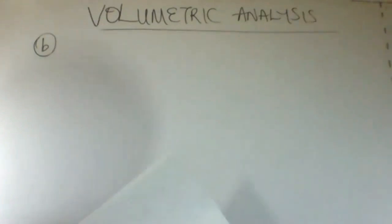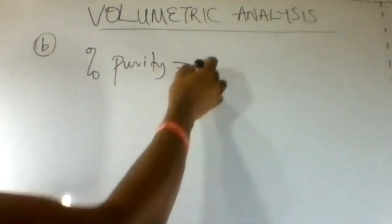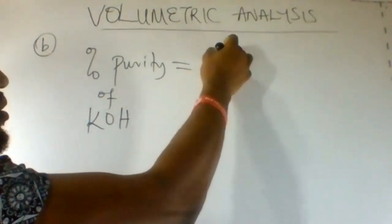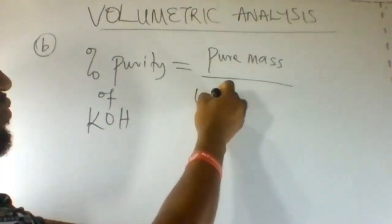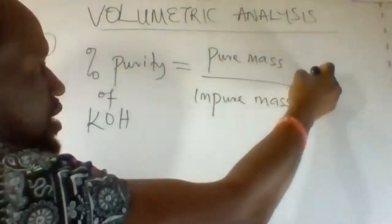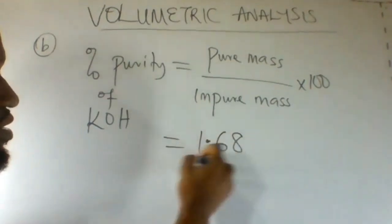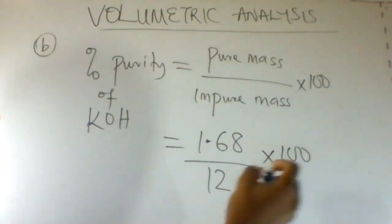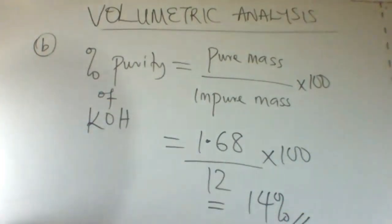Therefore, the percentage purity of KOH equals the mass of the pure KOH divided by the impure KOH multiplied by 100. Mass of the pure divided by mass of the impure multiplied by 100. The mass of the pure is 1.68. The mass of the impure is 12. Multiply that by 100. Our answer is 14%. So 14% pure KOH present.